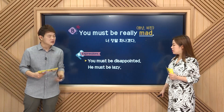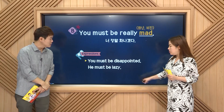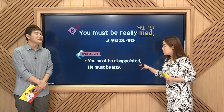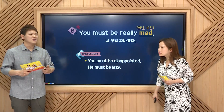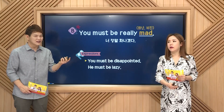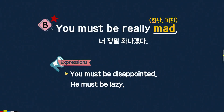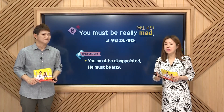이런 식으로 하게 되면, be 동사 뒤에 형용사가 나오면서, 그 형용사 할 것이다, 이런 상태일 거야, 이렇게 확신을 주게 되죠. disappointed 발음 한 번만 짚어주세요. disappointed. disappointed. 이걸 빠르게 하면 약간 플랩이 나서, disappointed, disappointed, 이렇게 될 수 있는데, 꼭 그렇게 할 필요는 없어요. 옵션일 뿐입니다. 같이 한 번 두 문장 읽어보도록 할게요. you must be disappointed. he must be lazy. 그리고 본문 한 번 읽어볼게요. you must be really mad.